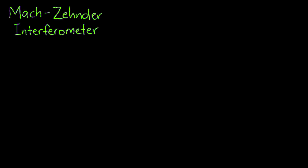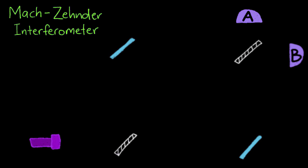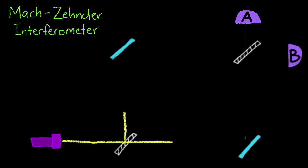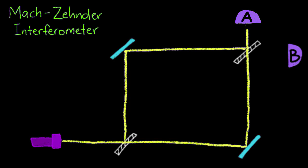A Mach-Zehnder interferometer consists of a light source, a beam splitter, two mirrors, another beam splitter and two light detectors. The light source emits a beam of light and the beam splitter splits the beam exactly 50-50. The mirrors guide the light toward the second beam splitter where the two beams recombine and interfere.